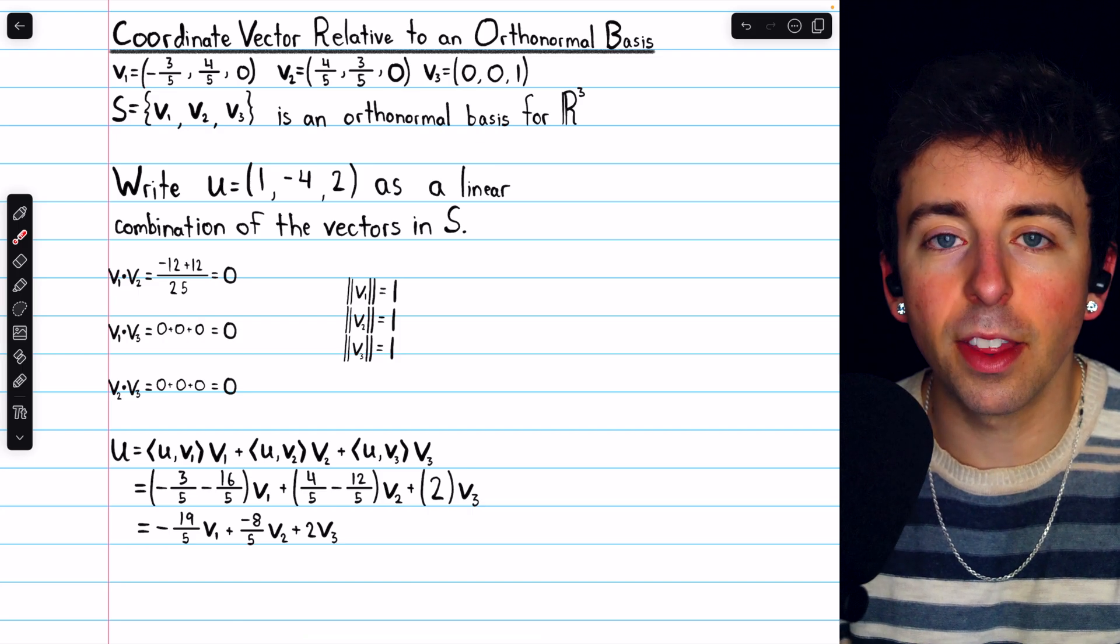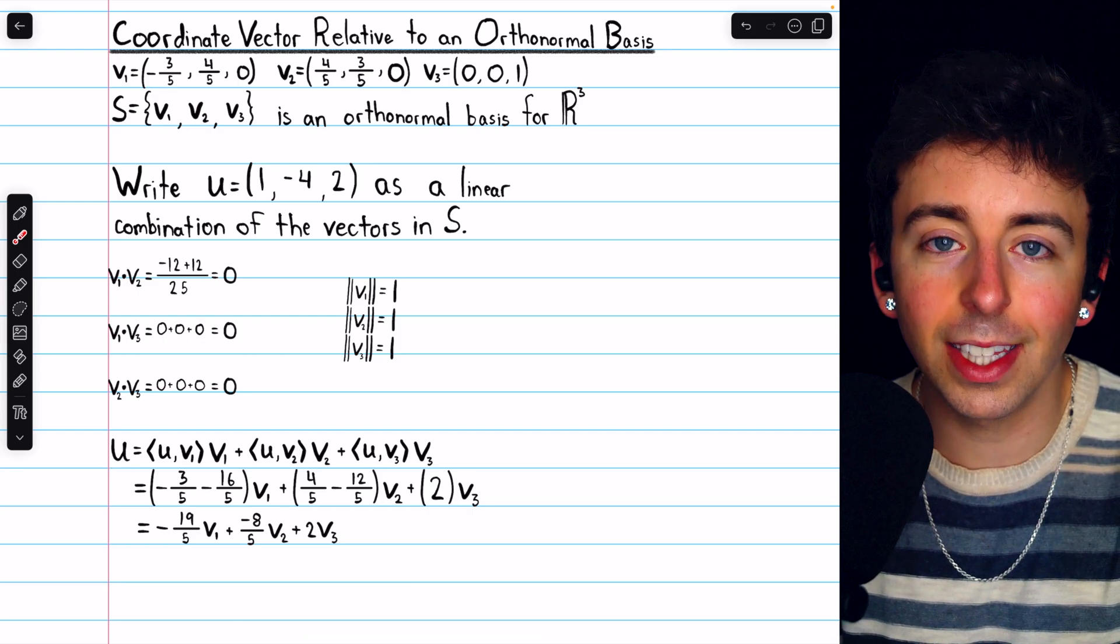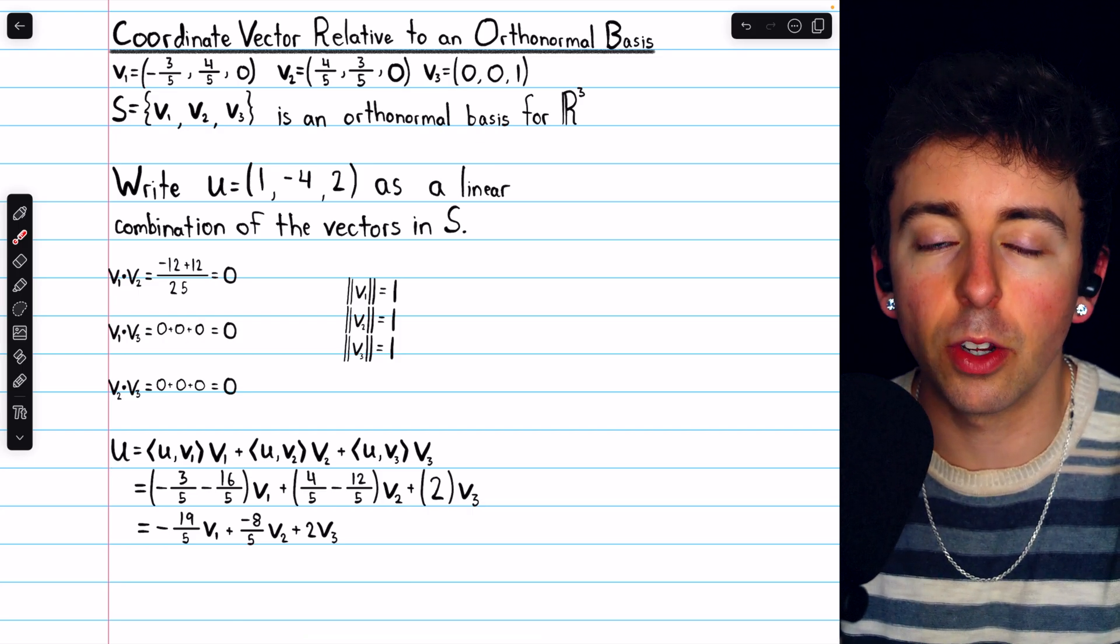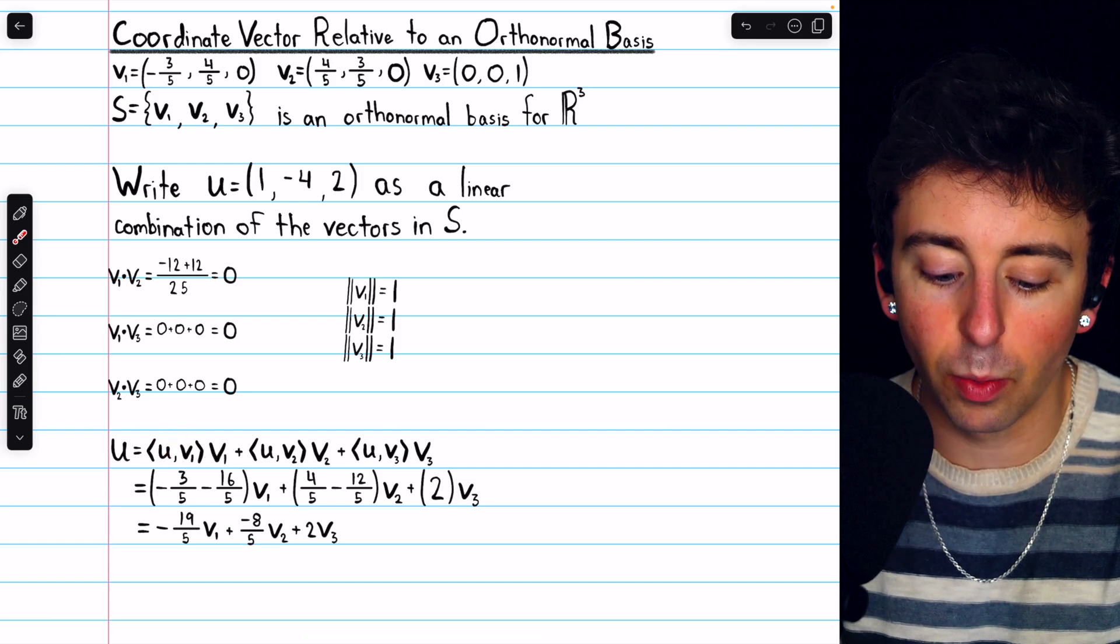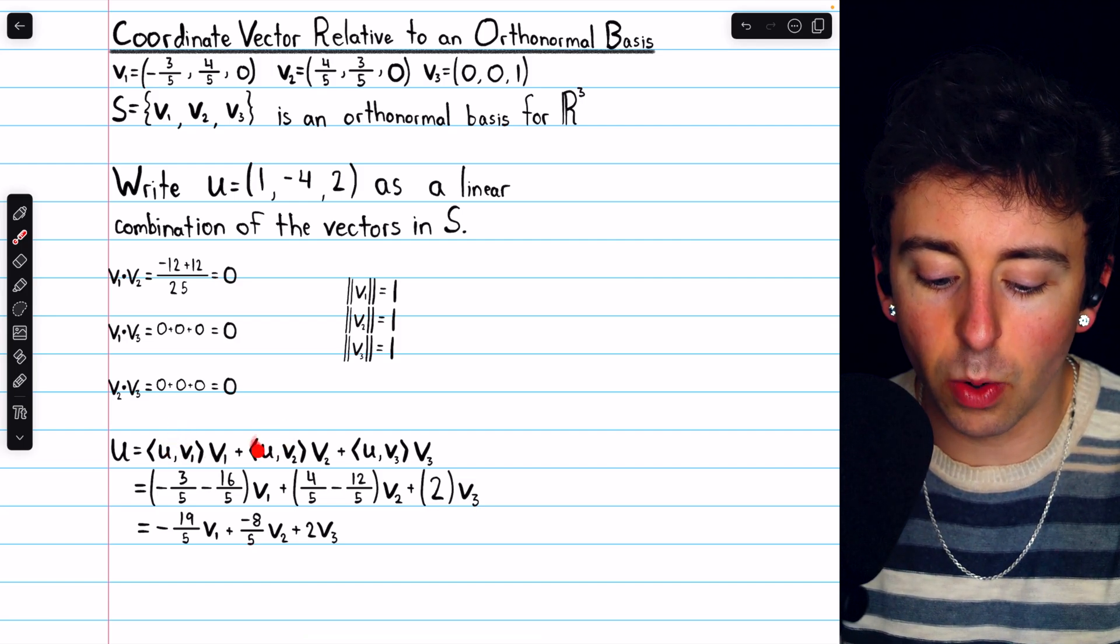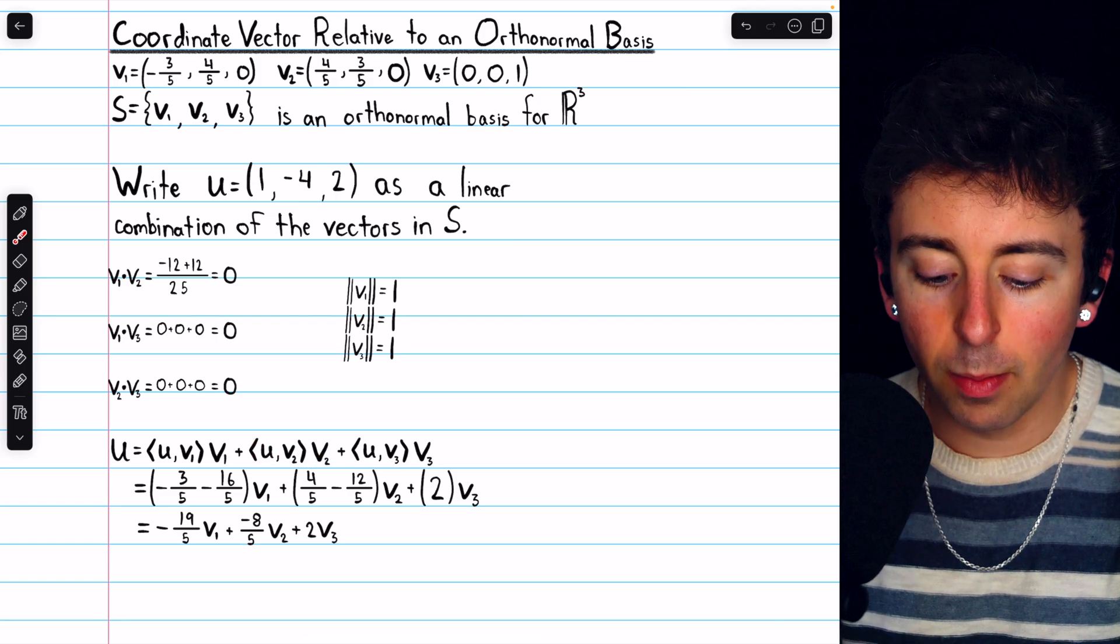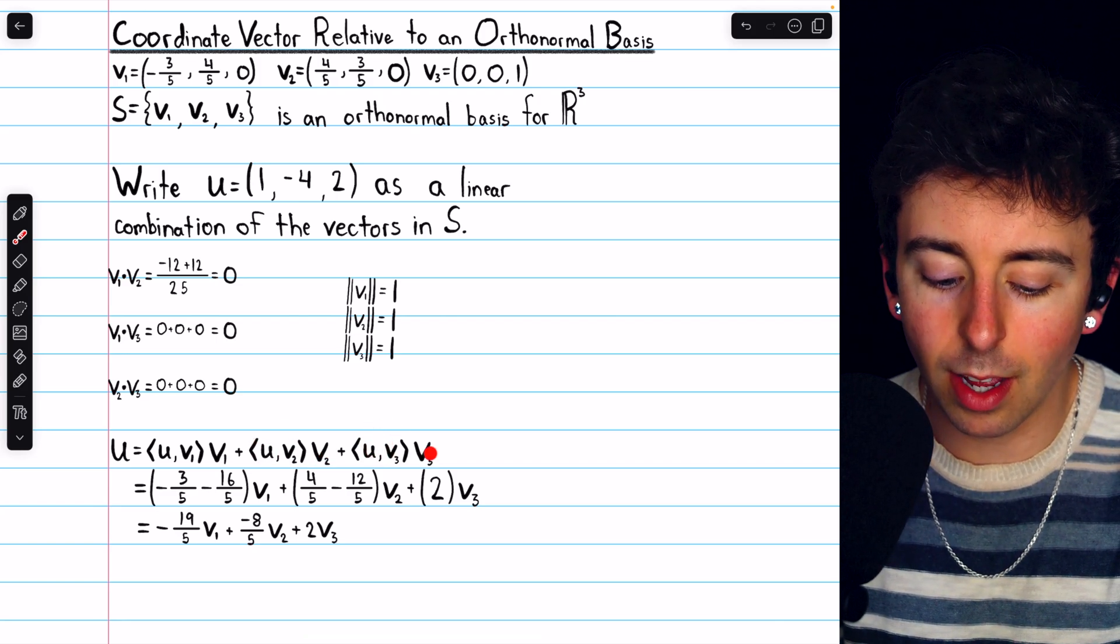Then, it's very straightforward to apply the theorem to write u as a linear combination of v1, v2, and v3. It's just the inner product of u with v1 times v1, plus the inner product of u with v2 times v2, plus the inner product of u with v3 times v3.